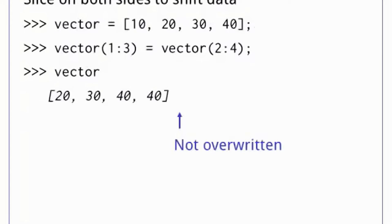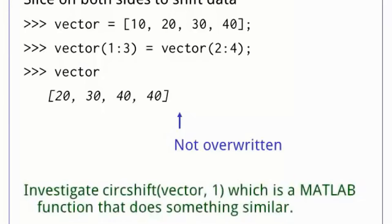Slicing on both sides of a statement gives us a way to shift data along the axes. If vector is a one-dimensional array, then vector 1 to 3 selects slots 1, 2, and 3, while vector 2 to 4 selects the values in slots 2, 3, and 4. Doing the assignment overwrites the lower three values, but it leaves the uppermost untouched. MATLAB has a function circshift, which shifts values in an array in a circular pattern. Rather than discarding the leftmost item, it is placed in the rightmost spot, and all other values are shifted left.